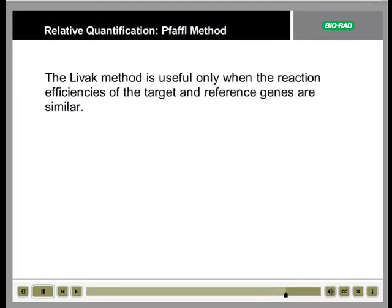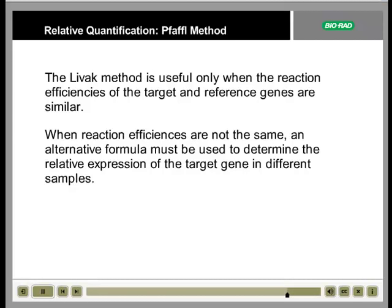The Livak method is useful only when the reaction efficiencies of the target and reference genes are similar. If these efficiencies are not the same, an alternative formula must be used to determine the relative expression of the target gene in different samples.